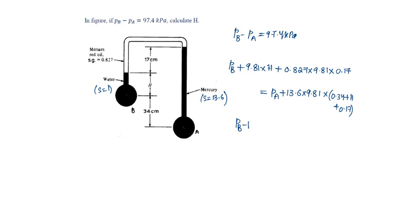Pb minus Pa, that is given as 97.4 kilopascals, will be equal to, send this to the other side, that is 13.6 into 9.81 into 0.34 plus H plus 0.17.